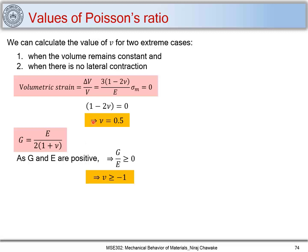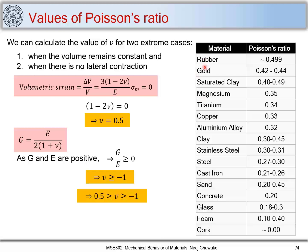So these are the two extreme cases: Poisson's ratio for isotropic elastic materials must lie between -1 and 0.5. For most metals and alloys, Poisson's ratio lies between 0.2 and 0.4. When Poisson's ratio equals exactly 0.5, the material becomes an incompressible elastic isotropic material.